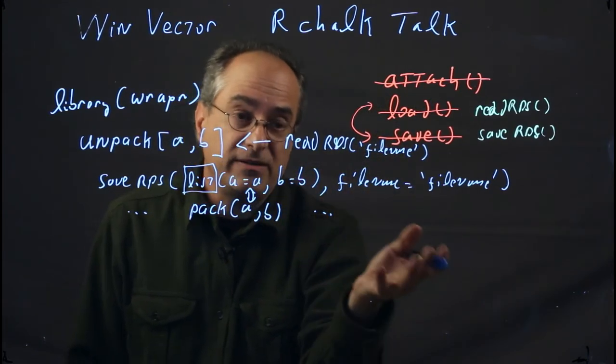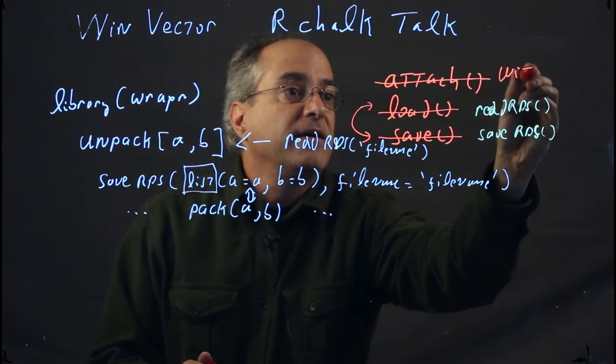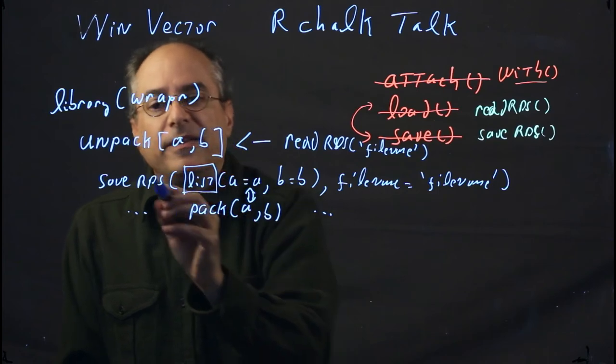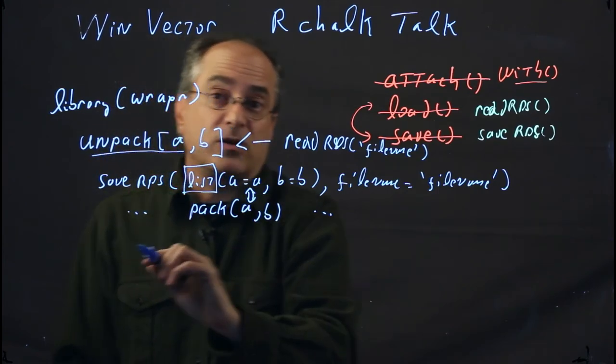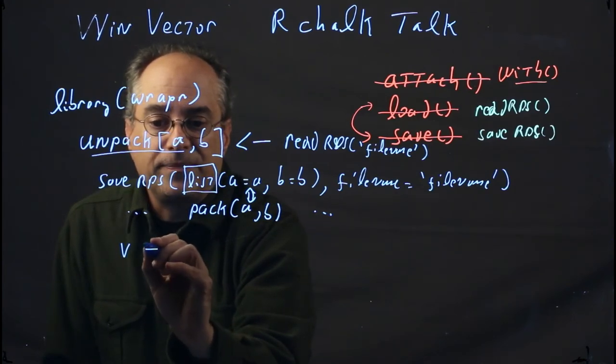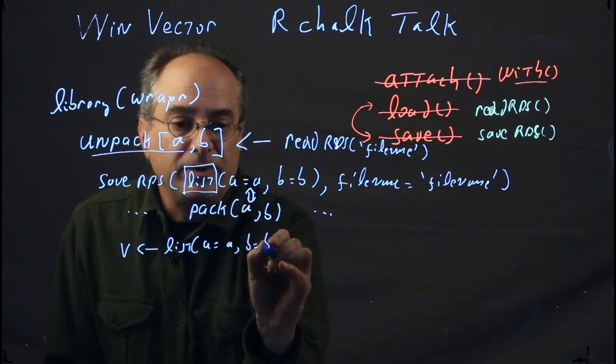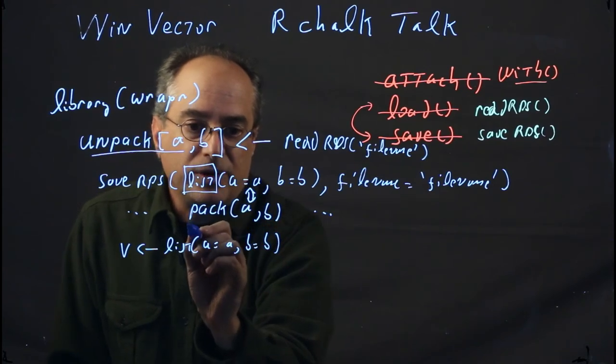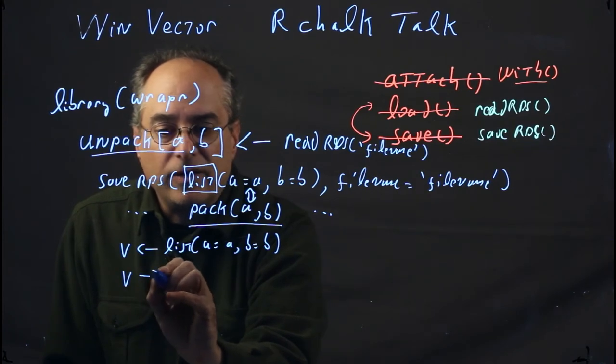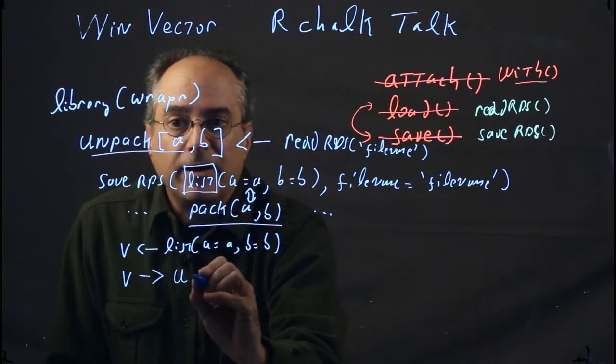I'm not really going to make fun of that. Our feeling is that maybe unpack is the natural co-arrow for list. We can do things like v <- list(a = a, b = b). If you're uncomfortable with that, we're putting out a notation in wrapr called pack. Then you can say v -> unpack[a, b]. Assignment is allowed the other direction in R—some people complain about it.